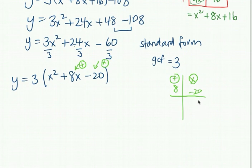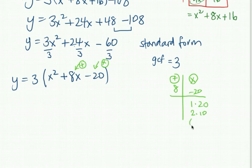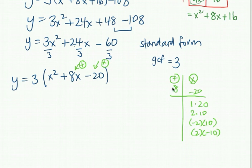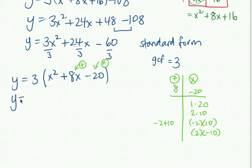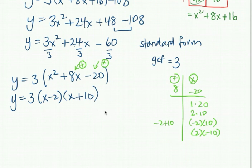Going through factors of 20: 1 times 20 can't make 8; 2 times 10 — oh, if we subtract them we could make 8. Since the product must be negative 20, one of them has to be negative. The bigger number should be positive since we need positive 8. So we have negative 2 and positive 10: they multiply to negative 20 and add to positive 8. If we see negative 2, write it as minus 2; and positive 10 as plus 10. So the factored form is 3 times (x minus 2)(x plus 10).